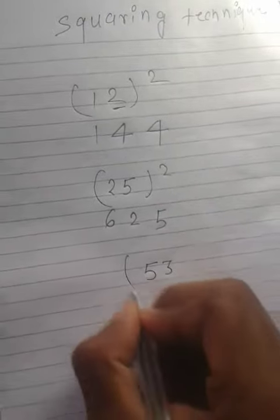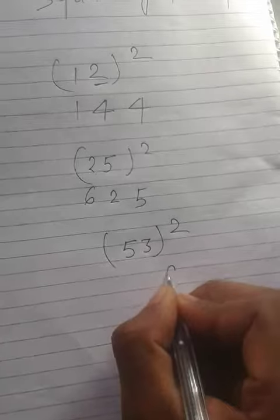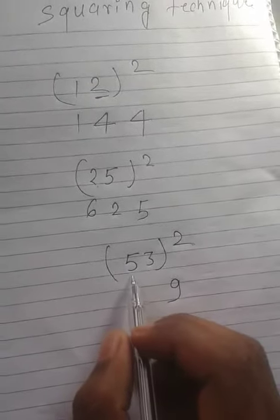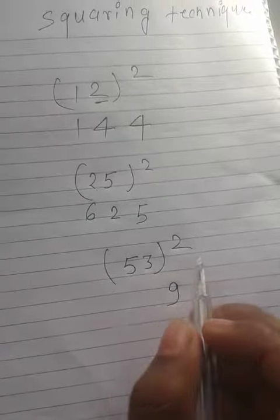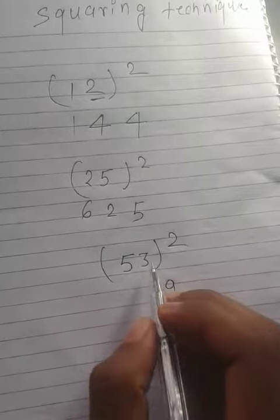I'm going to give another example: 53 squared. Square the last number - the square of 3 is 9. Multiply first and last number: multiplication of 5 into 3 is 15. Multiply 15 by 2 because we are doing squaring, so 15 into 2...